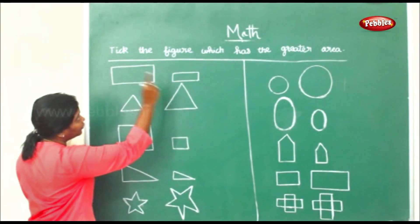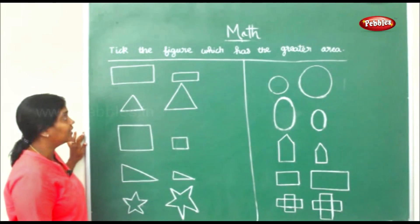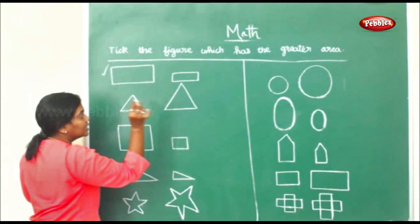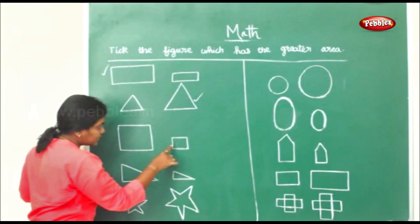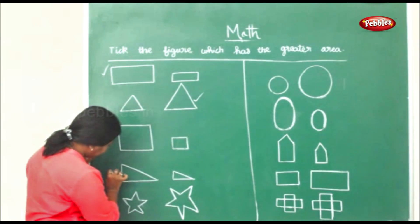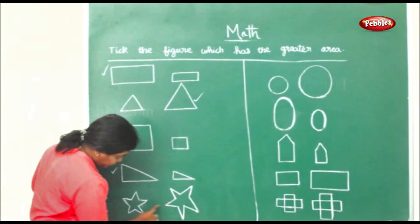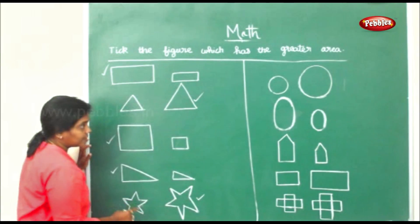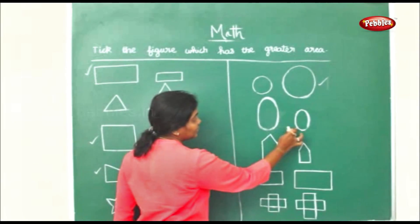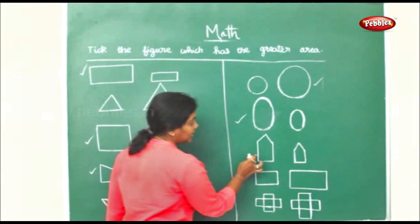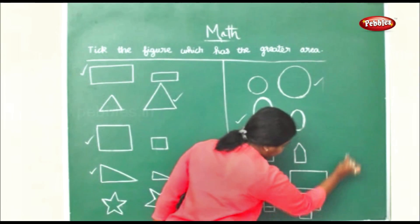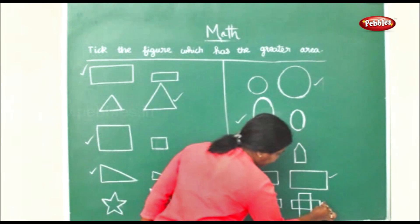Now let us compare two figures and find which has the greater area. Among these two, this one is greater. In these two figures, this is greater. In these two, this will be greater. In these two, this is greater than this. Again here, in these two figures, you can see this is greater. In these two, this would be greater. And in these two, this is a bit greater than that.